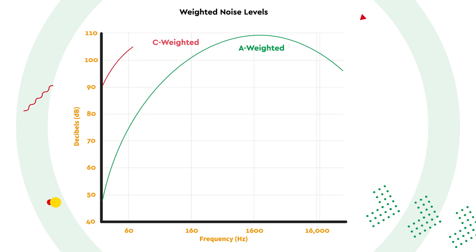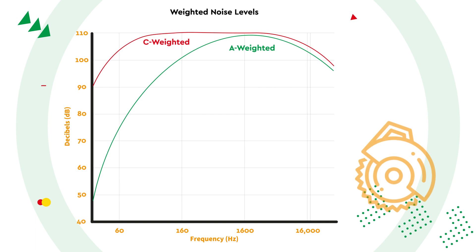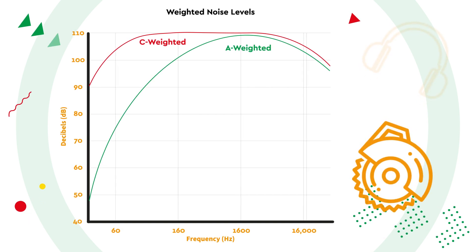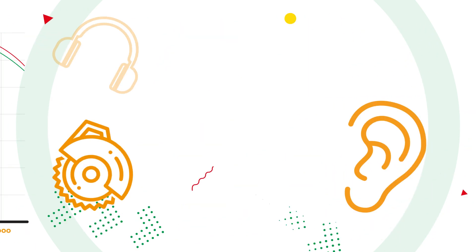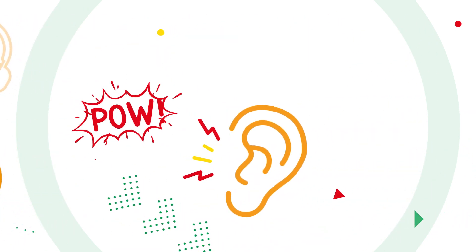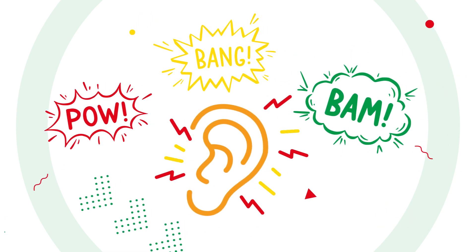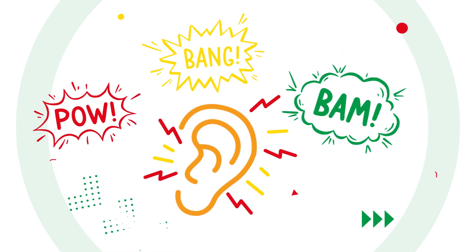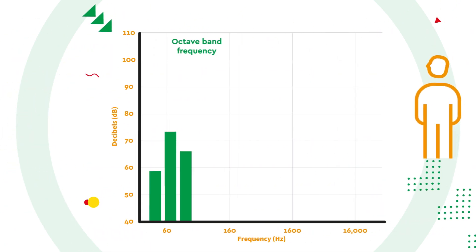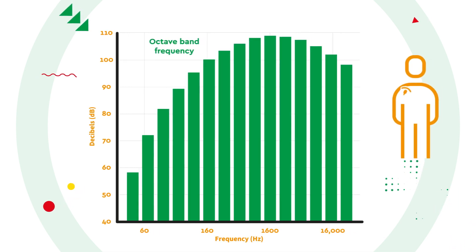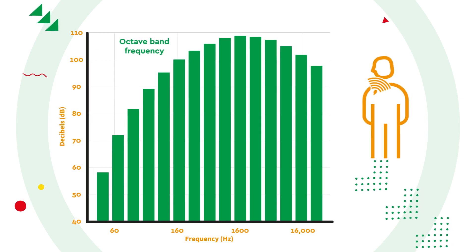C-weighted average noise level is filtered to a lower degree than A-weighted and therefore will always be higher — it can be used to select hearing protection. C-peak noise is the maximum decibel level associated with sudden crashes or bangs, and is an important measurement as peak sound can cause immediate long-term damage to the ear. Octave band frequency analysis records the noise intensity at a range of individual frequencies and is important when selecting hearing protection.